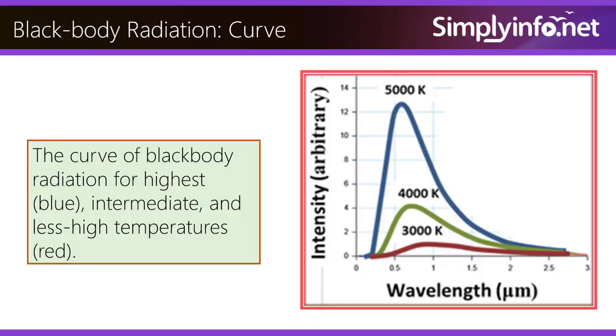Blackbody Radiation Curve: The curve of blackbody radiation for the highest, low, intermediate, and less high temperatures — shown in red.